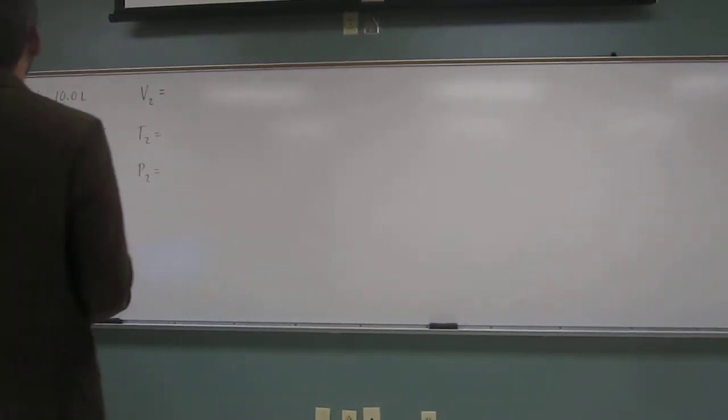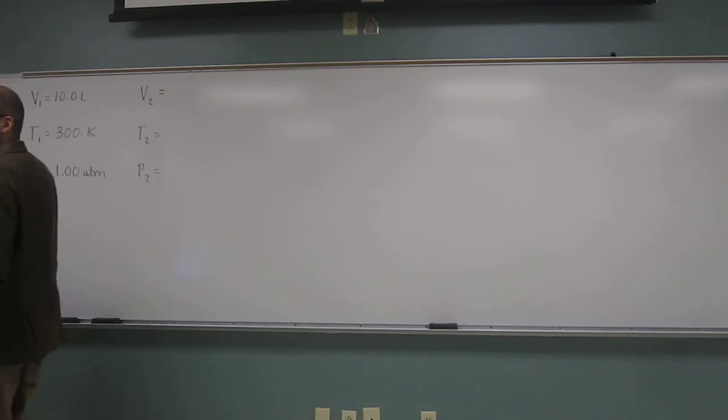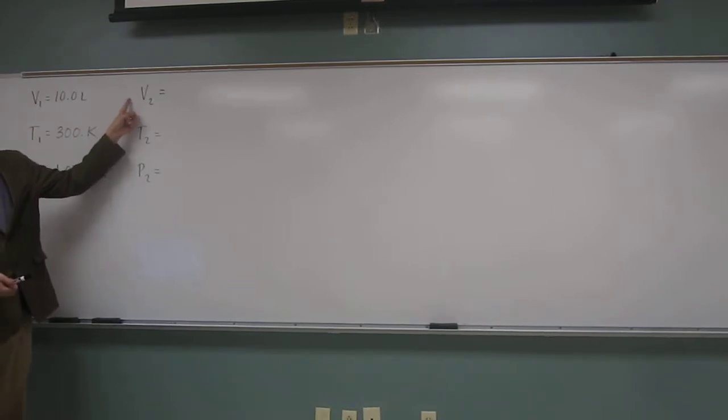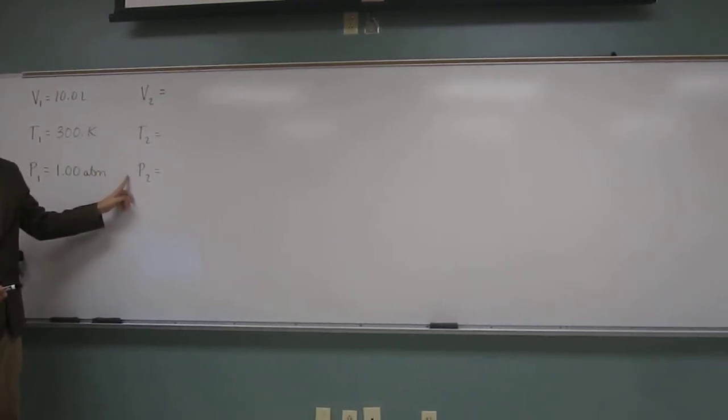So let's do another one of these gas law problems. This one's a little more convoluted, but we'll be able to figure it out. So it says, if you have 10.0 liters of carbon dioxide gas at 300 kelvin and 1.00 atm, if we double the volume and double the temperature, what is the new pressure?